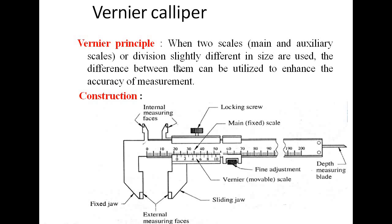Next is the vernier caliper. What is the principle of the vernier caliper? When two scales — a main scale and an auxiliary scale — that are slightly different in size are used, the difference between them can be utilized to enhance the accuracy of measurement. The difference between the two scales is used to calculate the reading. This is the basic principle of the vernier caliper.